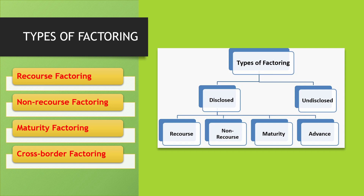Types of factoring: factoring is divided into two parts — disclosed factoring and undisclosed factoring. Disclosed factoring is further divided into four parts: recourse factoring, non-recourse factoring, maturity factoring, and cross-border factoring. Disclosed factoring means the customer of the business is aware of the factoring arrangement. In undisclosed factoring, the customer or purchaser does not know about the factoring arrangement. The entrepreneur puts a stamp on the invoice indicating the payment to be made to the factor in place of the seller.